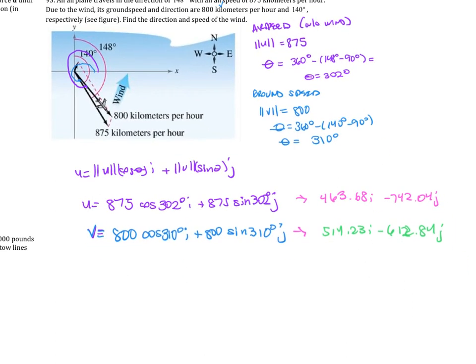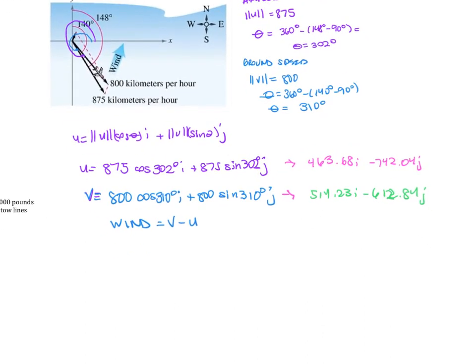In order to find the wind, okay, so we're trying to find the wind, that is going to be V minus U. So then you just subtract these vectors and then we'll get the resultant vector.